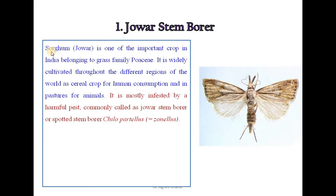Sorghum, which is called as jawar, is one of the important crops in India belonging to the grass family. It is widely cultivated throughout different regions of the world as a cereal crop for human consumption and in pasture for animals.